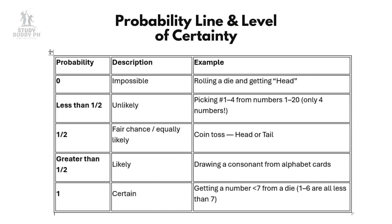Next, we'll explore the probability line, where we can see how likely or unlikely events are — from impossible to certain — and learn how to place examples on this scale.